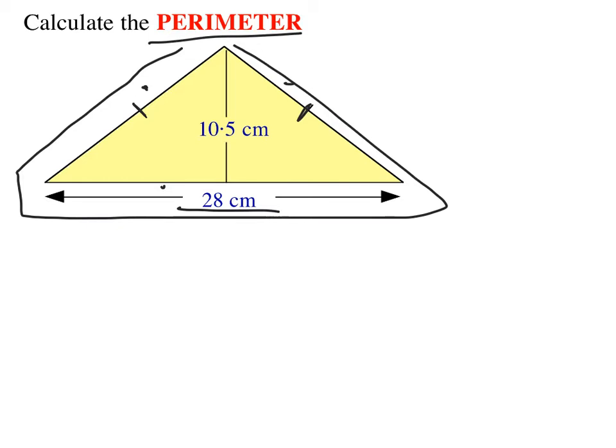To work out this side here, I'm going to use Pythagoras. So I'm going to split this triangle in half, because then I can form a right angle. So the height of this triangle is 10.5, and the length is only half the 28 centimeters, so it'll be 14 here.